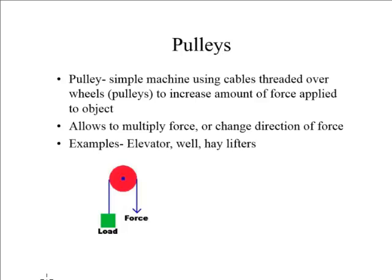The last type of simple machine is a pulley, which is simply a machine that has cables or ropes or threads threaded over a wheel or pulley that increases the amount of force applied to an object. This allows you to multiply your force or change the direction of your force, for example, an elevator or a well. Let me talk about this idea of a well.